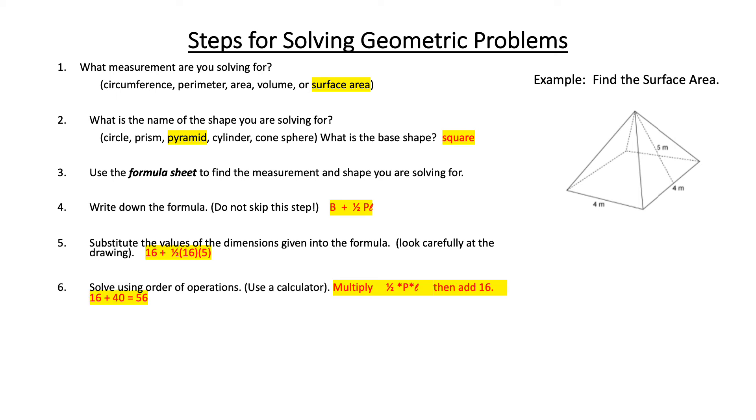So we solve the multiplication first. On the right side of the equation, if we solve for 1 half times 16 times 5, we get 40. Now we add 40 to 16, which is the area of the base. And our answer is 56. So we label it with meters squared since we're talking about area.